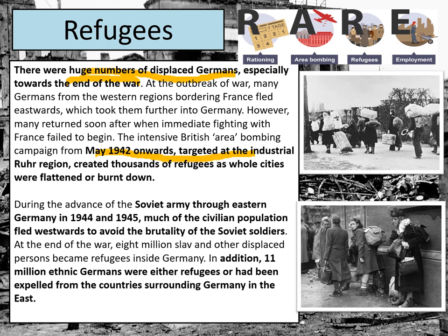As the Soviet army advanced through eastern Germany in 1944 and 1945, large numbers of the population fled westwards to avoid the brutality of Soviet soldiers, who carried out rapes, looting, and beatings — possibly in response to the 20 million Soviet lives lost in World War II. As a result, 11 million ethnic Germans were either refugees or had been expelled from countries. Even after the war, people wanting to return home found their homes destroyed or occupied, causing a real crisis that had to be resolved after 1945.